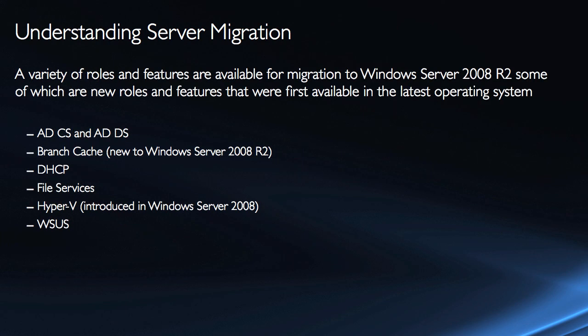There's a variety of different roles and features that are available for migration to Windows Server 2008 R2, some of which are new roles and features first available in the latest operating system. For instance, ADCS and ADDS — the first time those were available were in the original version of Windows Server 2008. It's not that certificate services weren't available, but certificate services as they relate to Active Directory and Active Directory Domain Services were.